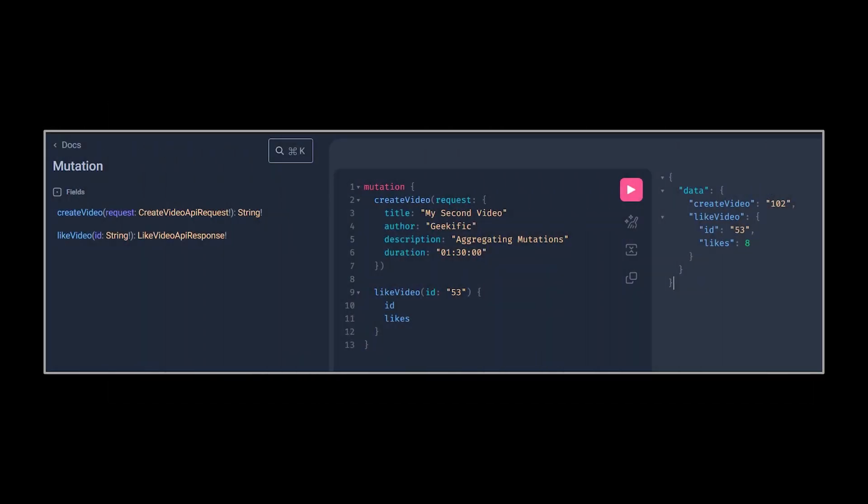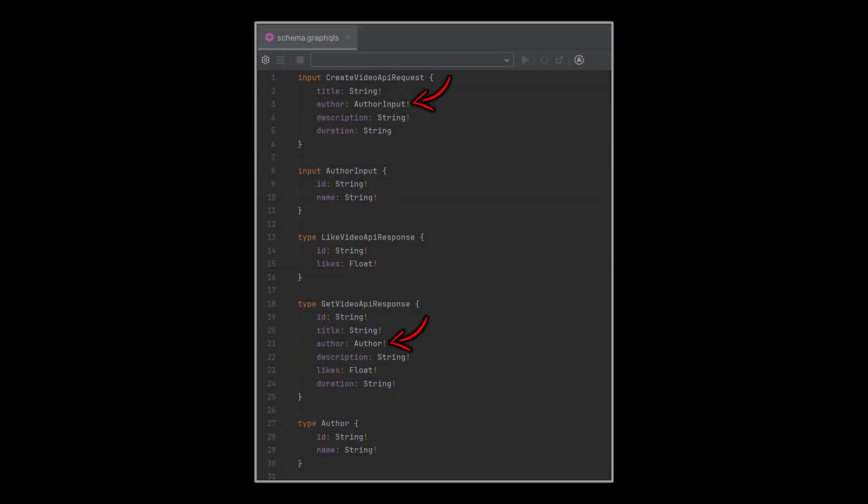Another thing we can do is bundle multiple APIs in a single call. In this example, we created and updated a video simultaneously with a single call to our server.